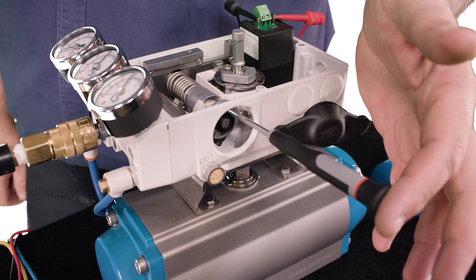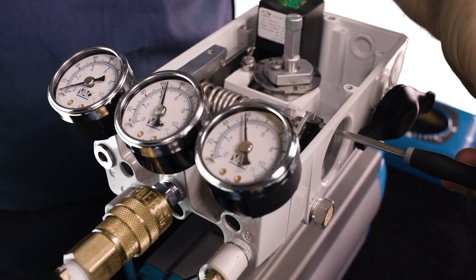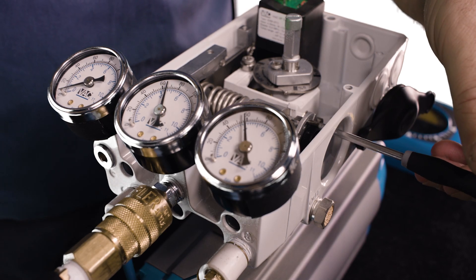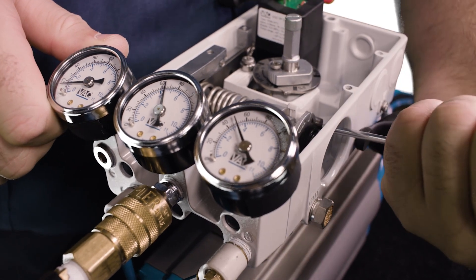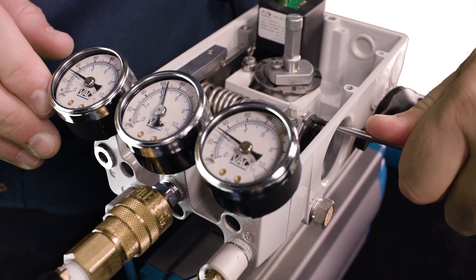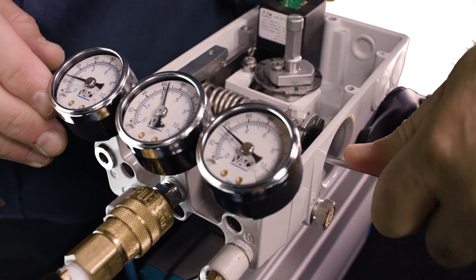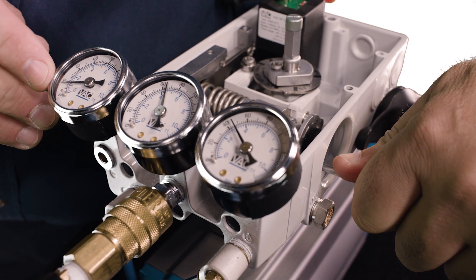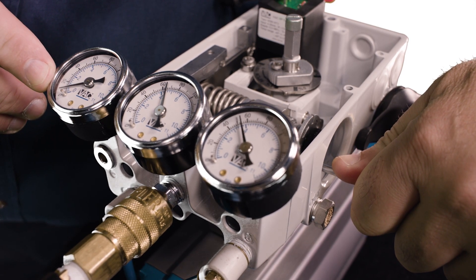Insert your screwdriver into a slot on the span wheel. Turn the span wheel clockwise until the C minus gauge needle reads above zero psi. Then turn the span wheel counterclockwise until the needle just touches the zero.